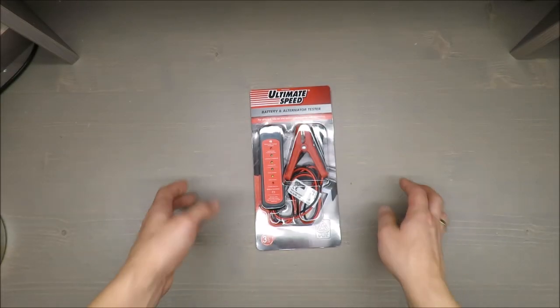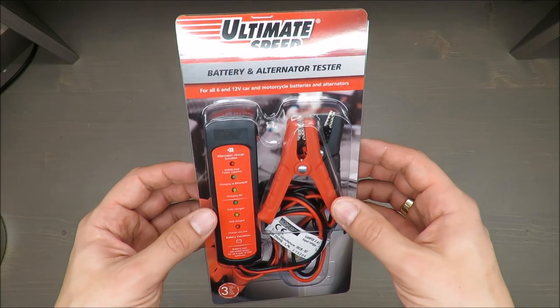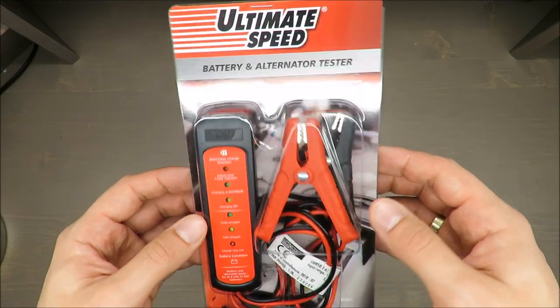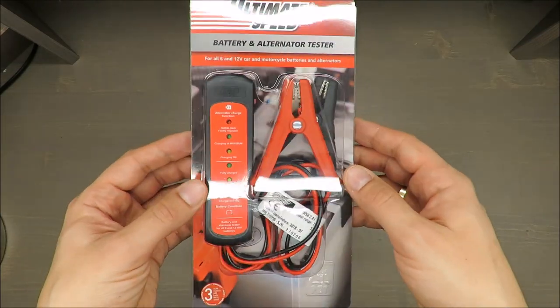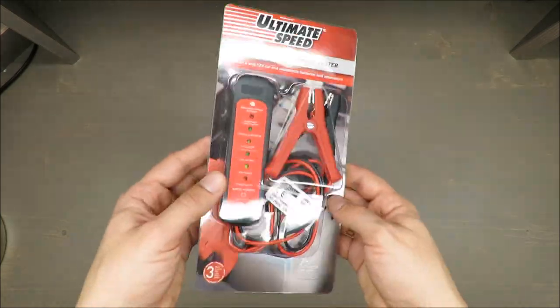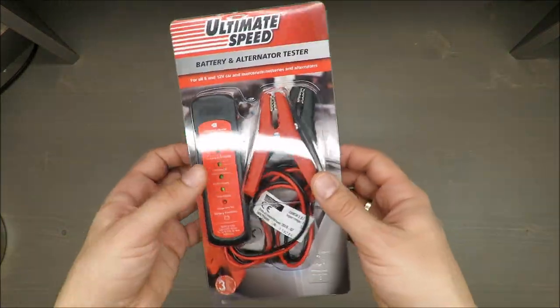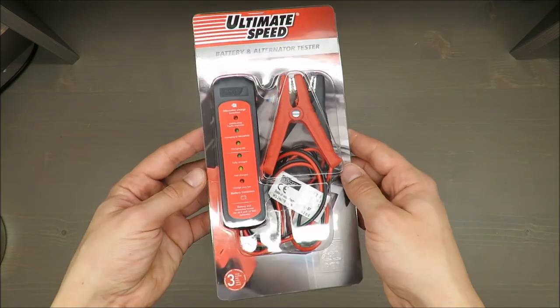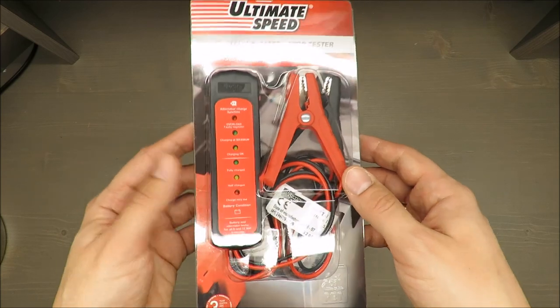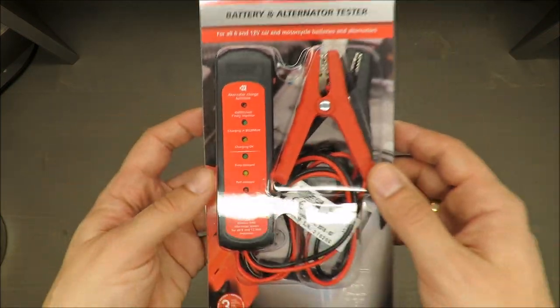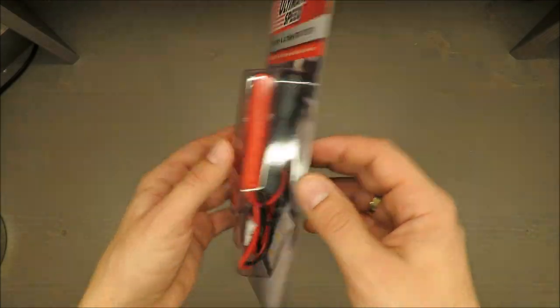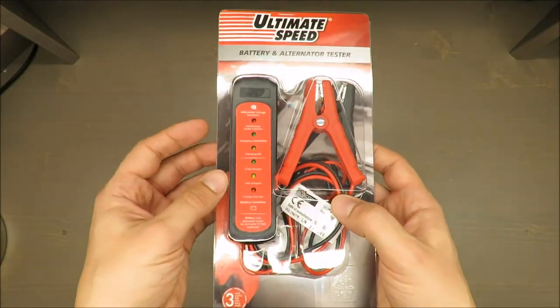Hello everybody, this is Out of the Box Unboxing. In today's episode I'm going to review this Ultimate Speed battery alternator tester. This video will be split into two parts. First, the unboxing, which is very simple, and second I will move to two cars to test the measurements—one petrol and one diesel—and we'll see what this battery and alternator tester can do.